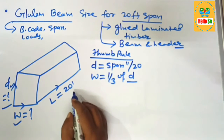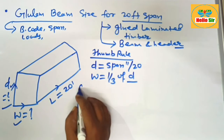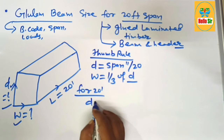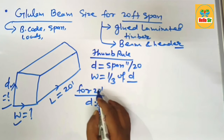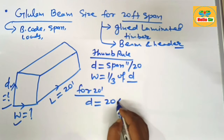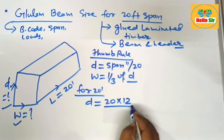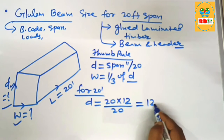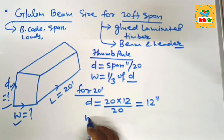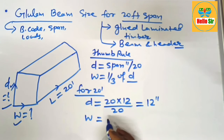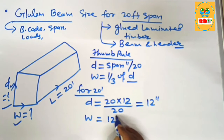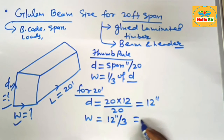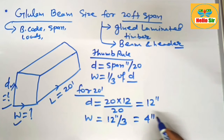Here we have to find out for a 20-foot span. The depth of the beam should be 20 multiplied by 12, divided by 20. This comes out to about 12 inches. And the width section of the beam is 12 divided by one third, which comes out to about 4 inches.